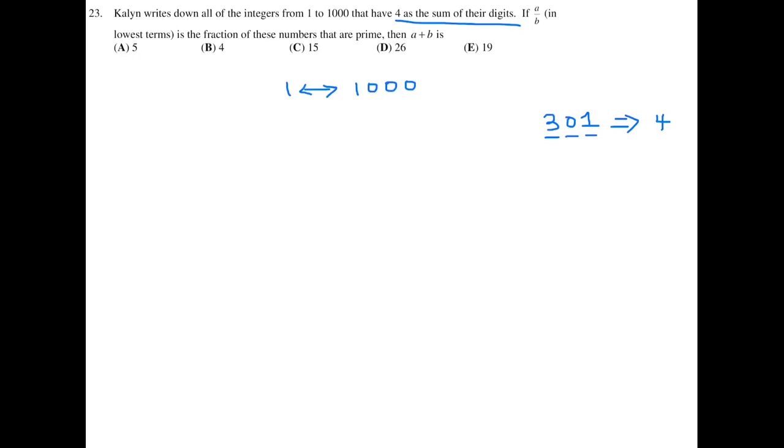So we have to now list all of these. So let's break it up into three categories. The numbers that are between one and nine, the numbers that are between 10 and 99, and the numbers that are between 100 and 999. Now, between one and nine, is there any number that has the sum of their digits as four? The only one, I think, is four. Right? The sum of the digits. There's only one digit. Sum is four.